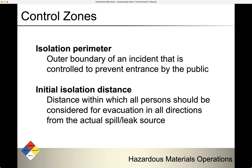Let's talk about some terms. Isolation perimeter: this is the outer boundary of an incident that is controlled to prevent entrance by the public. The isolation perimeter means nobody who is not part of the response is allowed inside this perimeter.